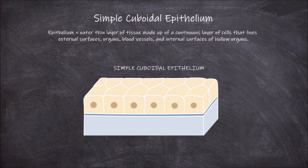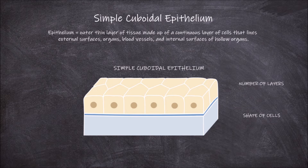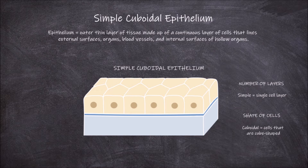There are several types of epithelium found lining the surfaces of the body. These can be distinguished based on a mixture of the number of layers of cells the epithelium is made up of, and the shape of the epithelial cells. When the epithelium consists of only a single layer of epithelial cells, it is referred to as simple epithelium. When the epithelial cells are cube shaped and appear square shaped in a cross section, they are called cuboidal cells.